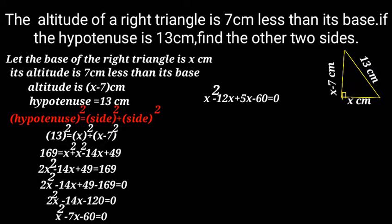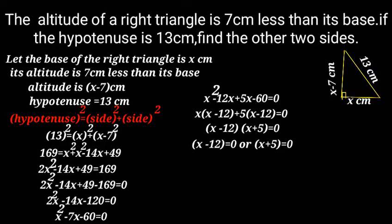x squared minus 12x plus 5x minus 60 equals 0. Factoring: x minus 12 times x plus 5 equals 0. Therefore x minus 12 equals 0 or x plus 5 equals 0.